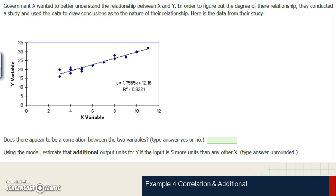Next example. Government A wanted to better understand the relationship between x and y. In order to figure out the degree of their relationship, they conducted a study and used data to draw conclusions as to the nature of their relationship. Here is the data from the study. So we've got the data here in this graph.